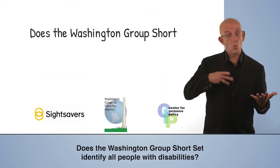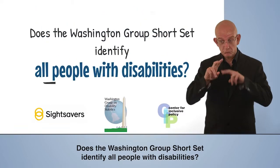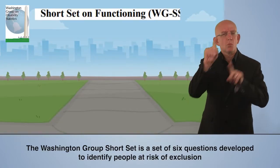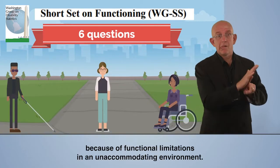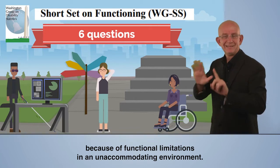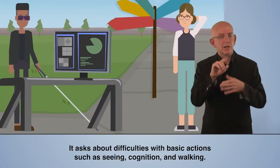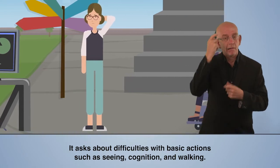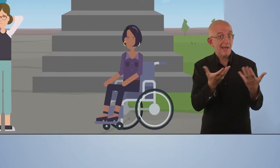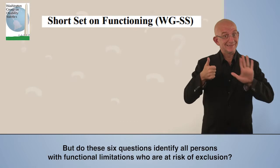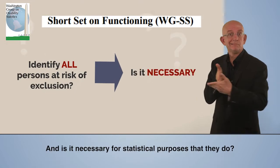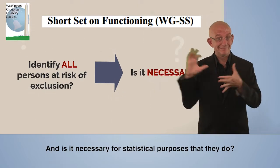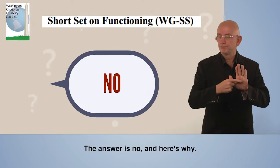Does the Washington Group Short Set identify all people with disabilities? The Washington Group Short Set is a set of six questions developed to identify people at risk of exclusion because of functional limitations in an unaccommodating environment. It asks about difficulties with basic actions such as seeing, cognition, and walking. But do these six questions identify all persons with functional limitations who are at risk of exclusion, and is it necessary for statistical purposes that they do? The answer is no, and here's why.